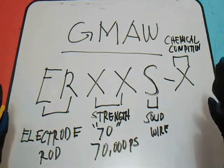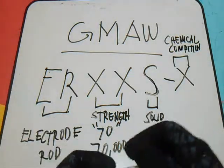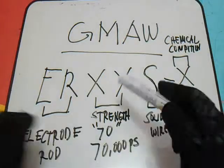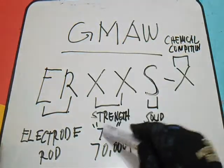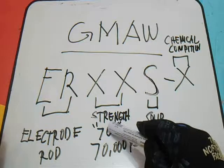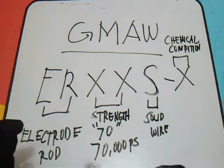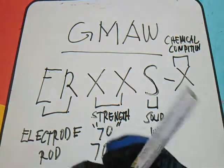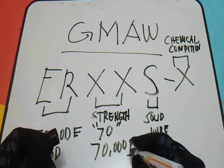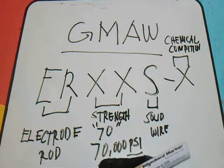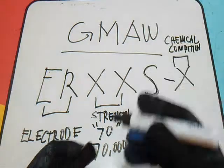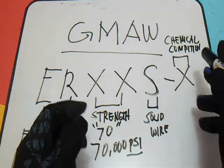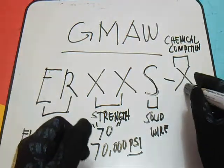Let's review: ER means electrode rod. The double X denotes filler tensile strength of at least 70,000 PSI — pounds per square inch. S means solid wire. And the last X indicates the chemical composition.